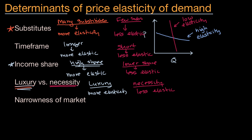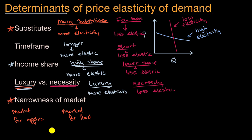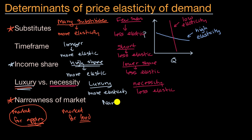The last factor sometimes discussed is the narrowness of the market. For example, we could talk about the market for apples versus the market for food. Which is more narrow? Apples are a subset of all food, so the market for apples is the narrower situation. In a narrower market, you tend to have more substitutes — if the price of apples goes up, people say maybe they'll buy pears or bananas instead. So quantity is more sensitive to changes in price, and you have more elasticity.